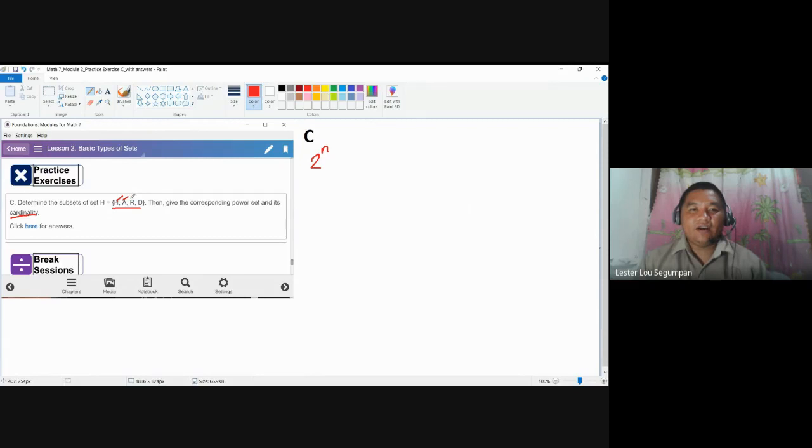We have h, a, r, and d. So you have four elements. So the cardinality of the power set is 2 to the power of 4, which is equal to 2 times 2 times 2 times 2, which is equal to 16.